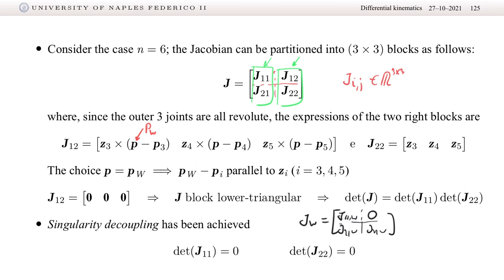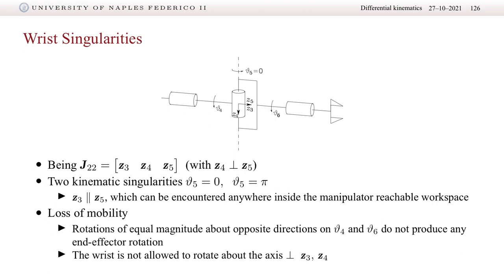In response to a student question: the 6×6 Jacobian is decomposed into four 3×3 blocks. J11 represents the contribution of the first three joints to the linear velocity of the end effector. J21 is the contribution of the first three joints to the angular velocity of the end effector. J12 is the contribution of the last three (wrist) joints to the linear velocity, and J22 is their contribution to the angular velocity.